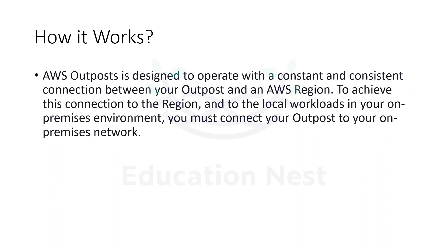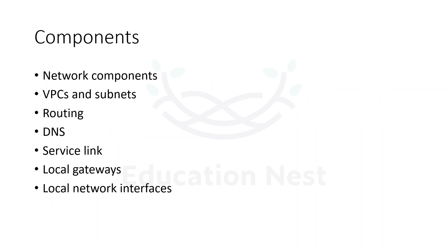Outpost is designed to operate with a constant and consistent connection between the Outpost and the AWS region. To achieve this, Outpost needs to be connected both ways - connected to your on-premises network and also connected to the AWS region. The network components for this connection include VPCs and subnets, routing, DNS, service links, local gateways, and local network interfaces.